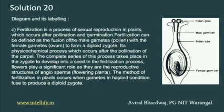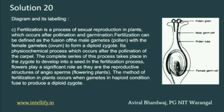Pollination and germination are the two methods by which plants make food and form grains. Fertilization is also a fusion of the male gametes called pollen and female gametes called ovum to form a diploid zygote. Pollen grains and ovum combine to form a diploid zygote. It is a physicochemical process which occurs after the pollination of the carpel. So go through this important question.